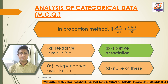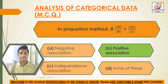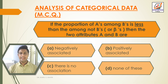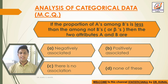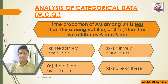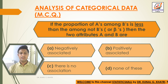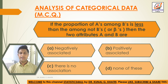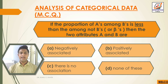Next question: if the proportion of A's among B's is less than among the not-B's (or beta's), then the two attributes A and B are — option A: negatively associated, option B: positive association, option C: there is no association, option D: none of these. The answer is option A, that is negatively associated.